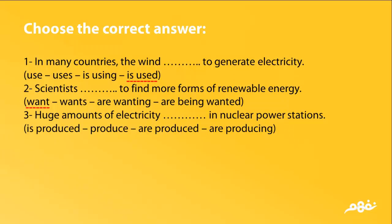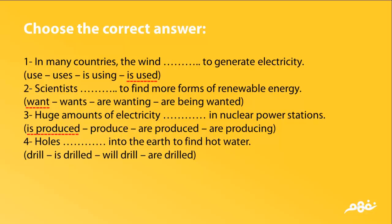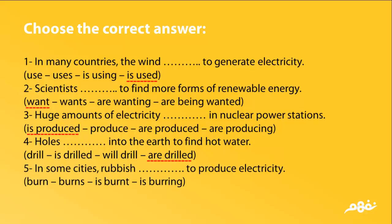Question 3: 'A huge amount of electricity __ in nuclear power stations.' Options: Is produced / Produce / Are produced / Are producing. The answer is 'is produced.' Question 4: 'Holes __ into the earth to find hot water.' Options: Drill / Is drilled / Will drill / Are drilled. The answer is 'are drilled.' Question 5: 'In some cities, rubbish __ to produce electricity.' Options: Burn / Burns / Is burnt / Is burning. The answer is 'is burnt.'